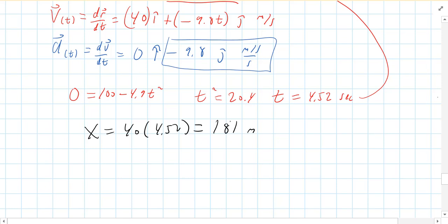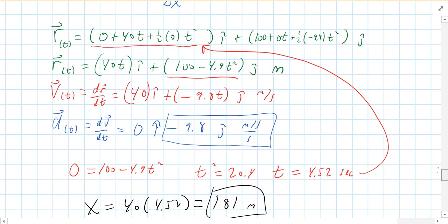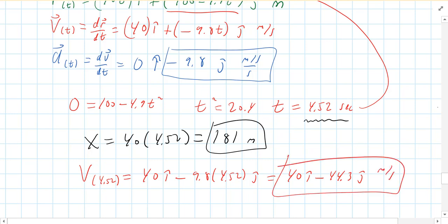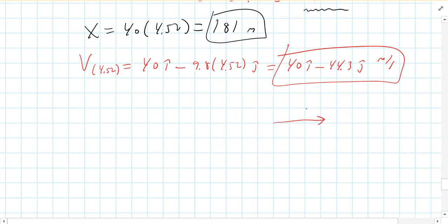And then the velocity, all I've got to do is take this time that I've calculated and plug it into my velocity vector. So my velocity at 4.52 seconds is 40 i-hat minus 9.8 times 4.52 j-hat. And if I plug that in, I get 40 i-hat minus approximately 44.3 j-hat meters per second. And if you wanted to, you could Pythag that out. So you'd have your Vx is 40, here's your Vy, 44.3. You could Pythag those, get the magnitude of the velocity, and do an inverse tangent and get the angle of impact as well quite easily.